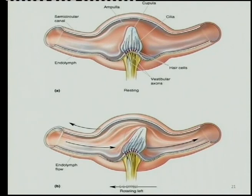You can see in the diagram — it's actually a beautiful picture — how the movement of the endolymph moves the cupula. It's a physical, moving stimulus that is then converted into a nerve impulse and interpreted as part of the balance response.